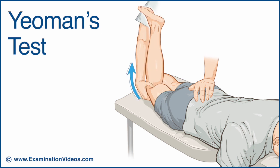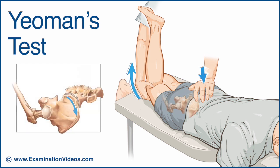Lift the knee to extend the hip while stabilizing the pelvis. This causes anterior rotation of the innominate relative to the sacrum and creates torsional load in the sacroiliac joint. This test is considered positive if the patient complains of localized pain in the region of the sacroiliac joint.